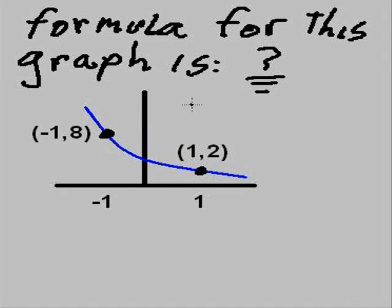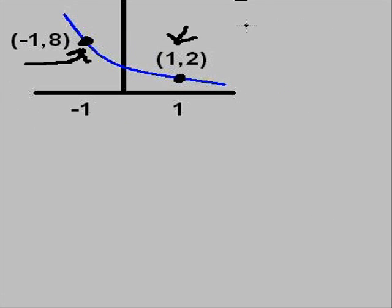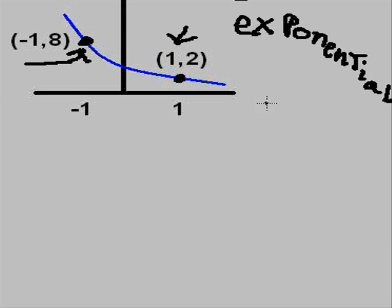So our job is to figure out the formula for this graph. Here are the two points on our line: negative 1 up to 8, and 1 over 1 up 2. What's the formula for this graph? We need some fighting room here, so let's take some space. It's exponential, so it's got to be of what form? Y equals y sub 0 times a to the t power.